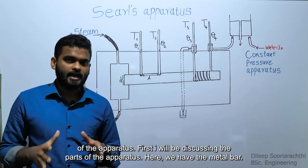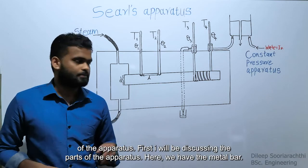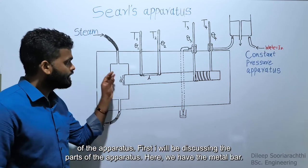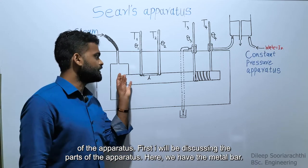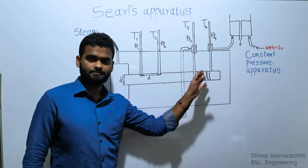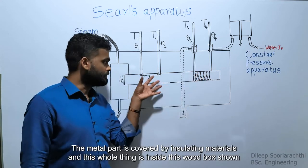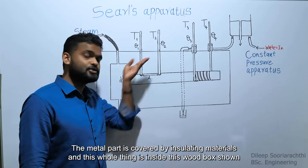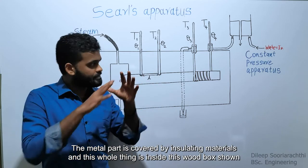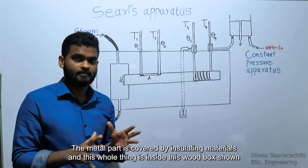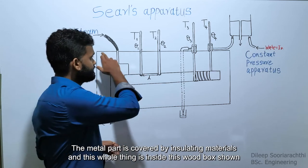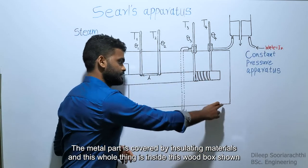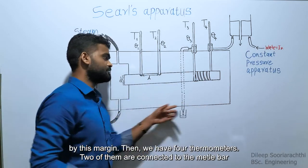First, I will be discussing the parts of the apparatus. Here we have the metal bar. The metal bar is surrounded by insulated materials, and this whole thing is inside a wooden box.